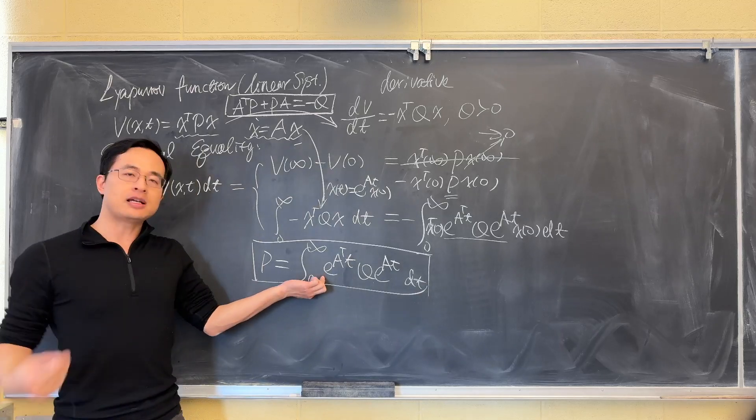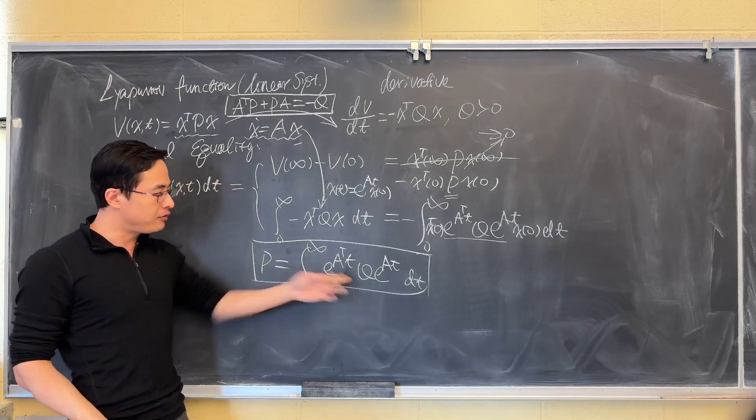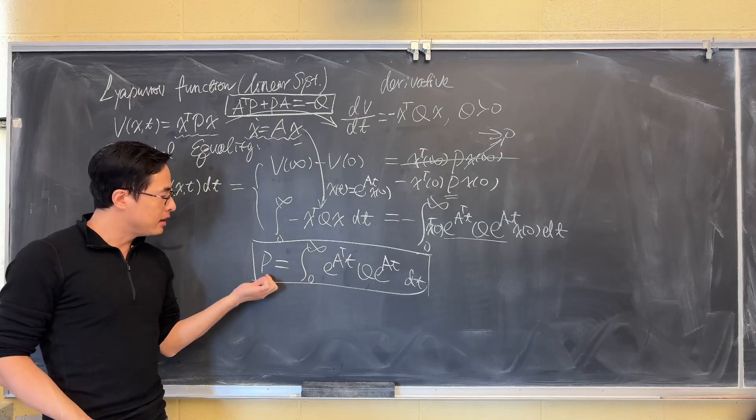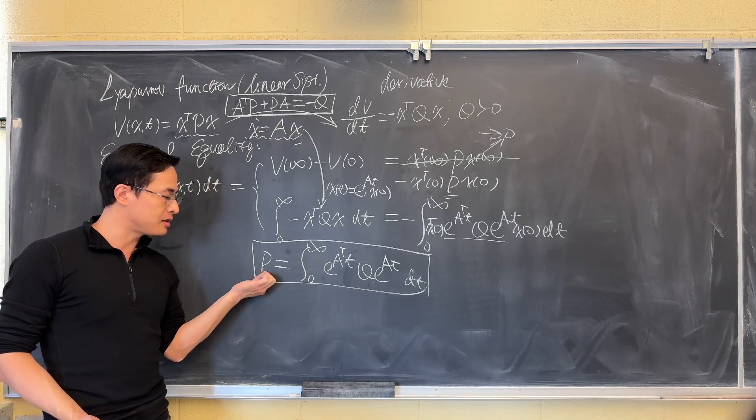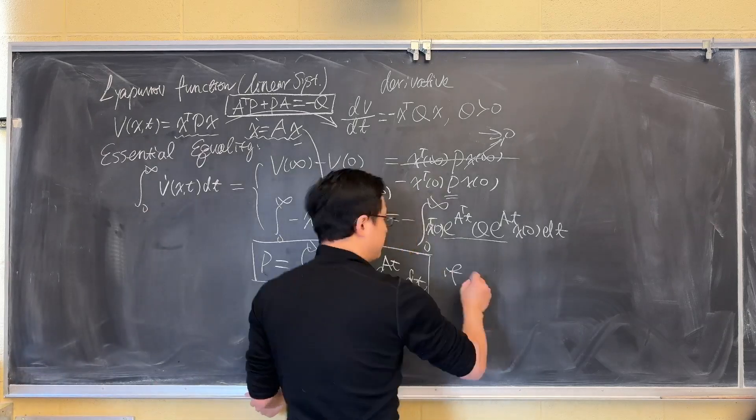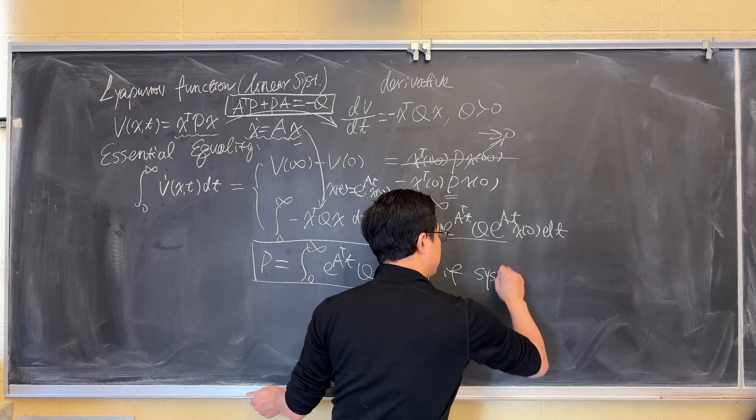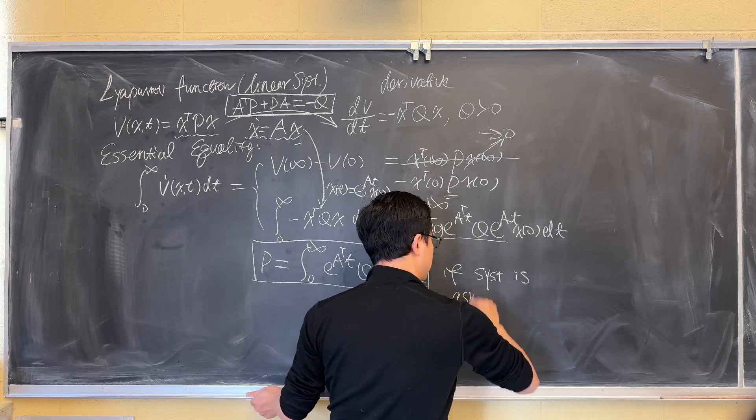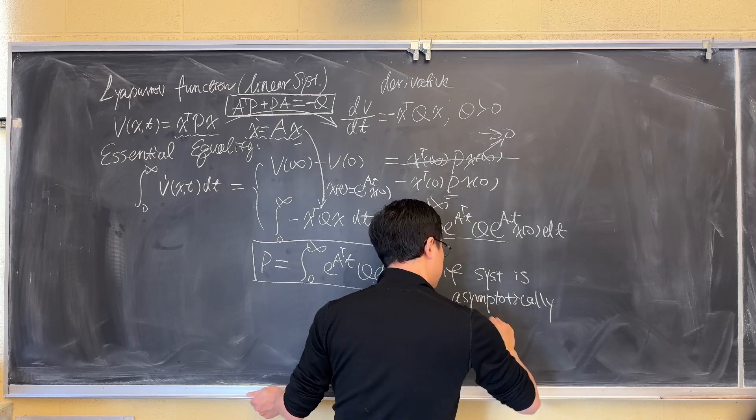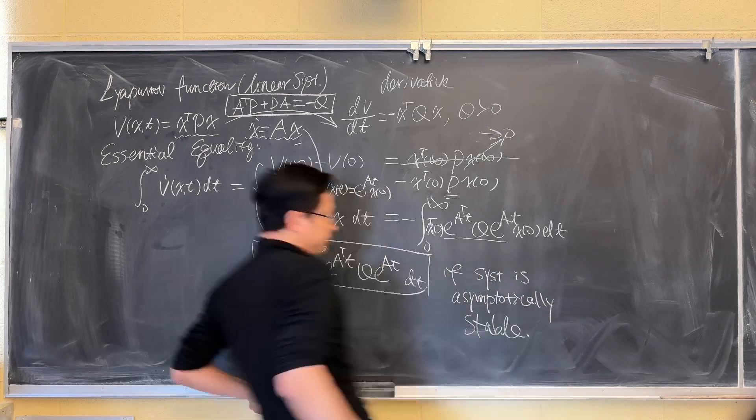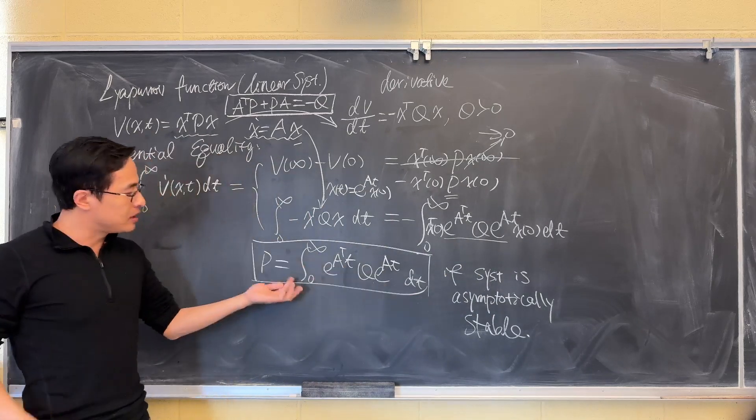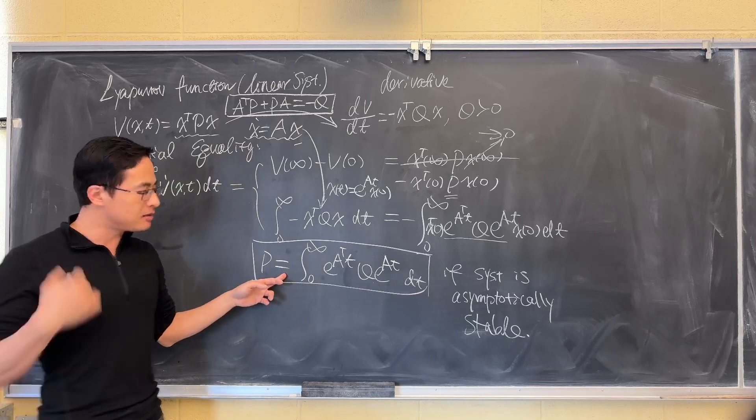That actually gives us a solution to P. If you give me a Q and the system is asymptotically stable, then one solution of P is precisely this. So this is if system is asymptotically stable, the condition is very important. So if it is asymptotically stable, then P has this structure. This is very good for analysis.